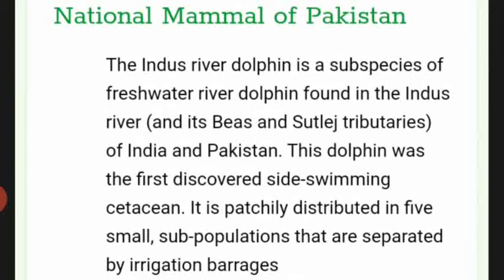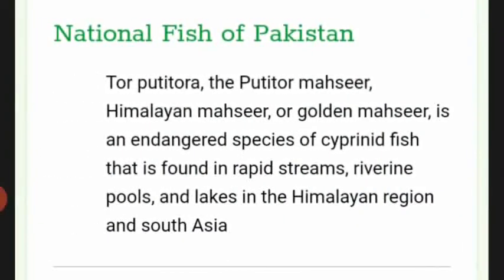The national mammal of Pakistan is the Indus River Dolphin, a subspecies of freshwater river dolphin found in the Indus River and its tributaries in India and Pakistan. This dolphin was the first discovered side-swimming cetacean and is partially distributed in five small sub-populations separated by irrigation barrages.